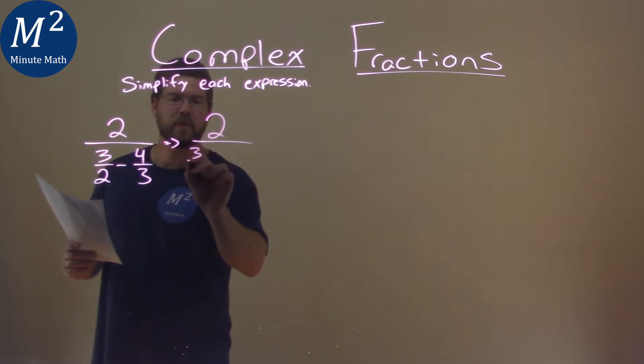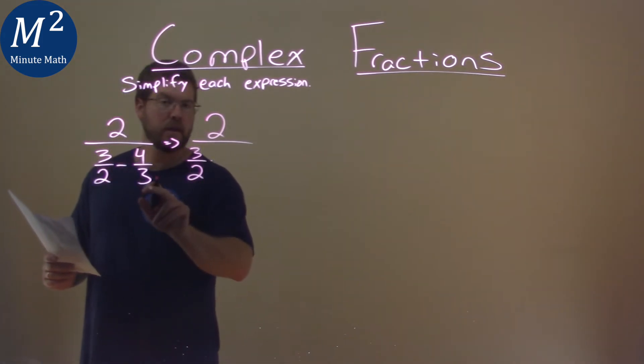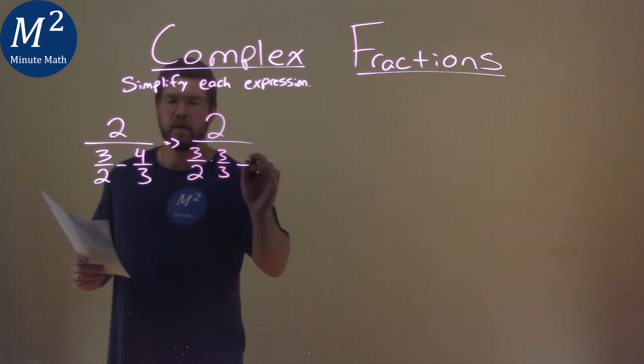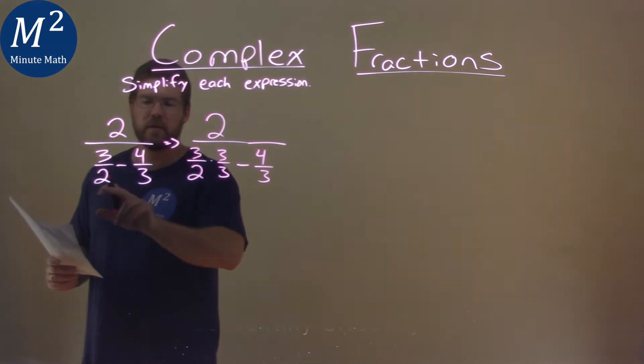So, 2 is on top. For 3 halves, I'm going to multiply by this denominator, 3, over itself. The 4 thirds stays, and I'll do the same thing with that 2.